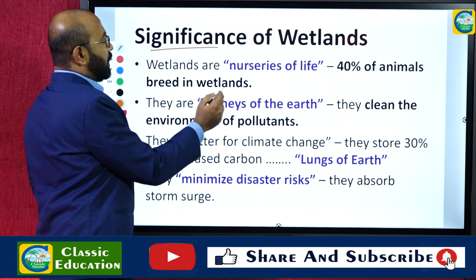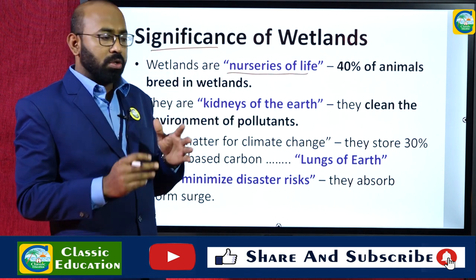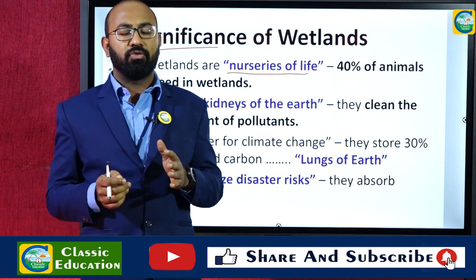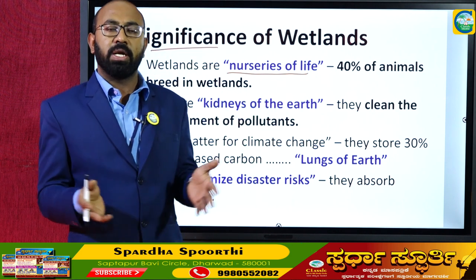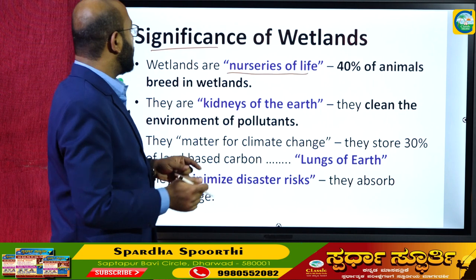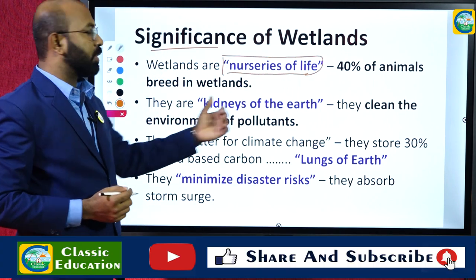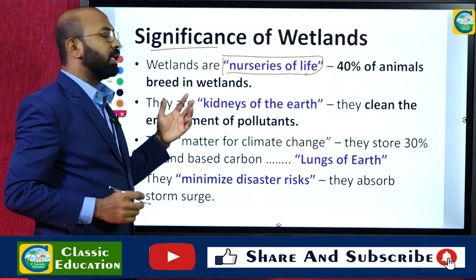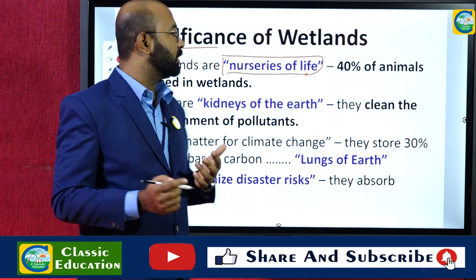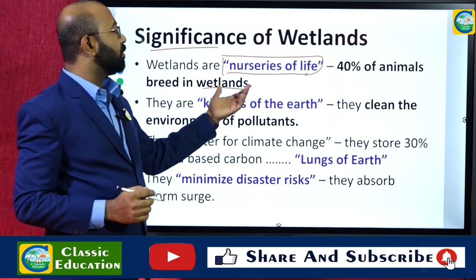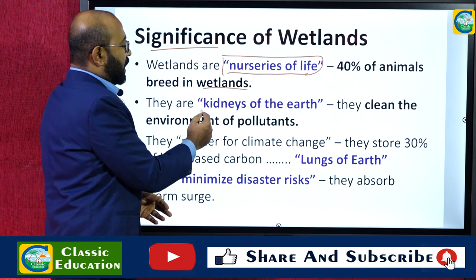Wetlands are called the nurseries of life. Although their total size is very small compared to the total geographical area of the world or India, 40 percent of all animals and birds breed or produce their offspring in wetlands. Because of this, they are regarded as the nurseries of the world.